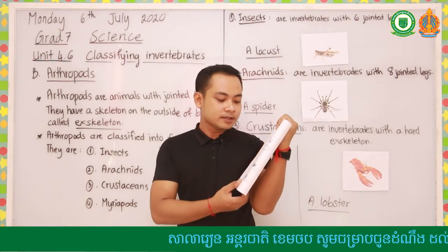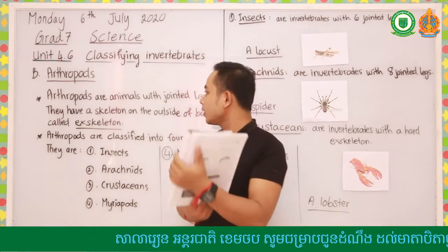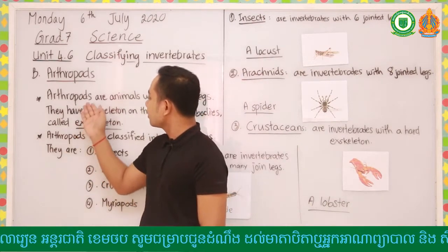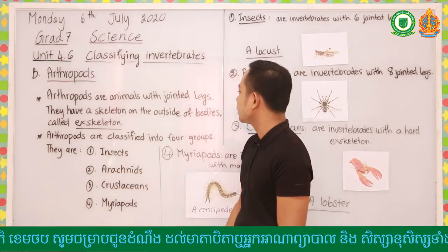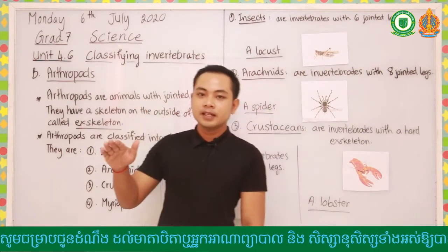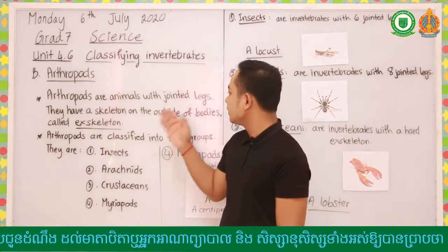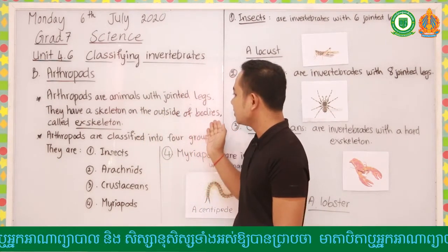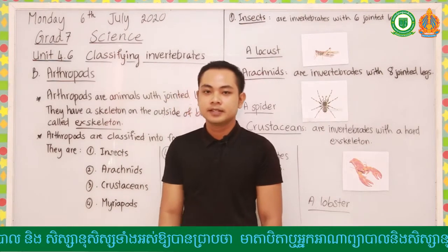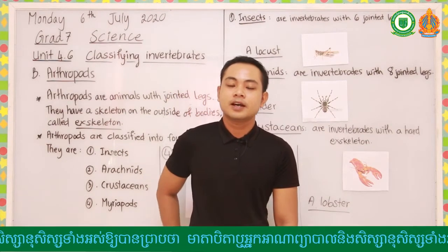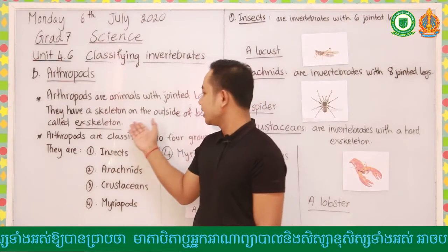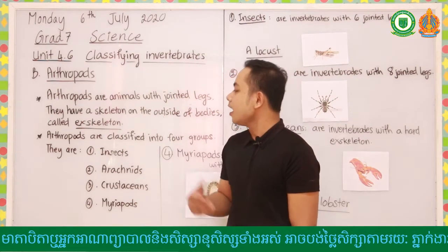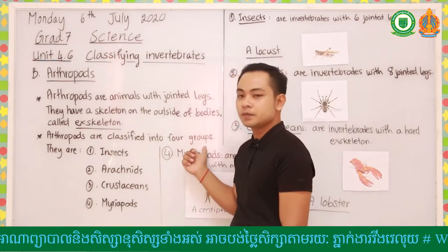And Arthropods - that is what we are going to study today. Take a look at this. Arthropods are animals with jointed legs, so the body and legs are jointed together. They also have a skeleton on the outside of their bodies, which is called an exoskeleton. So the skeleton is on the outside of the body.